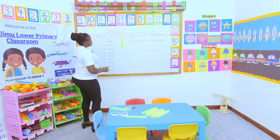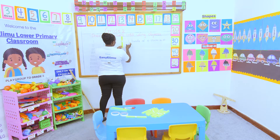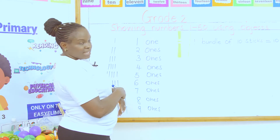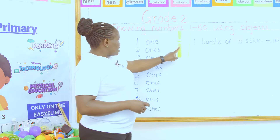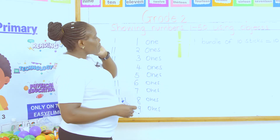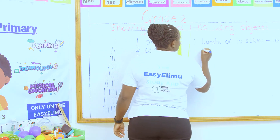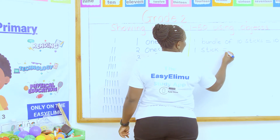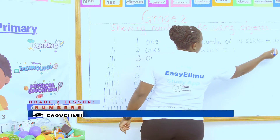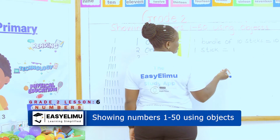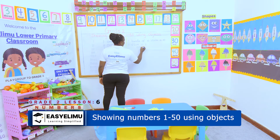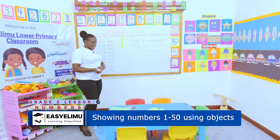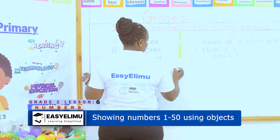Now what if I add another one? This one is not a bundle of ten sticks, but I've just added one there. So it is one bundle of ten sticks and one stick. If I have one bundle of ten and one stick, what does it give me? Ten plus one equals eleven. That is how we show numbers using objects.